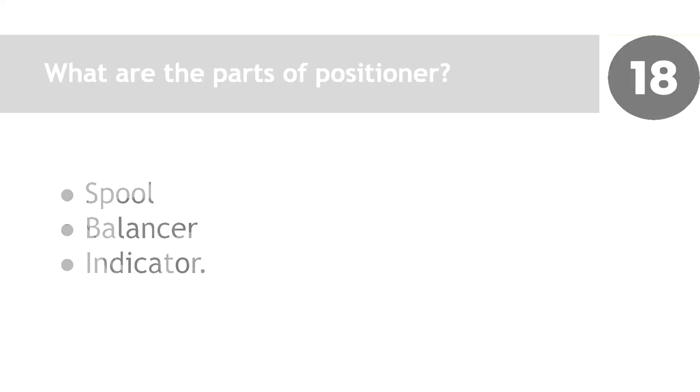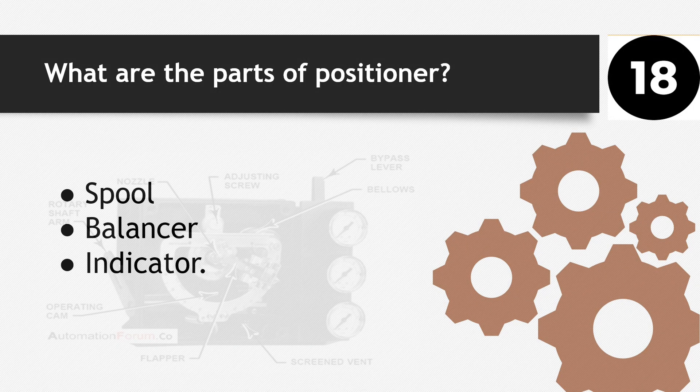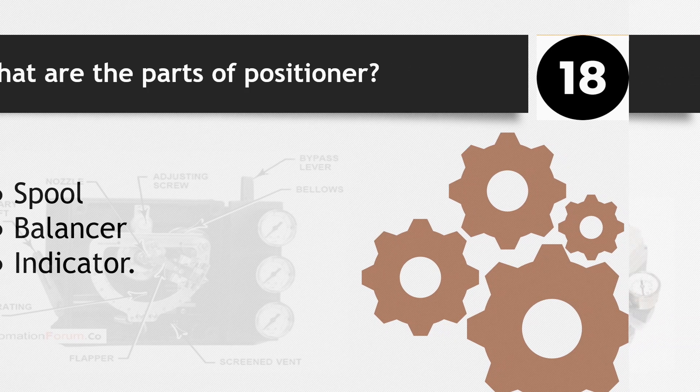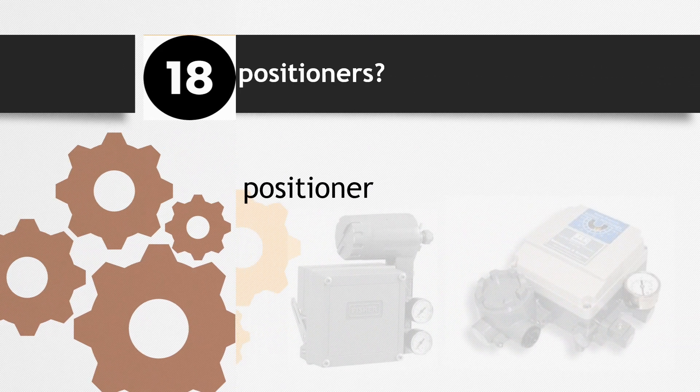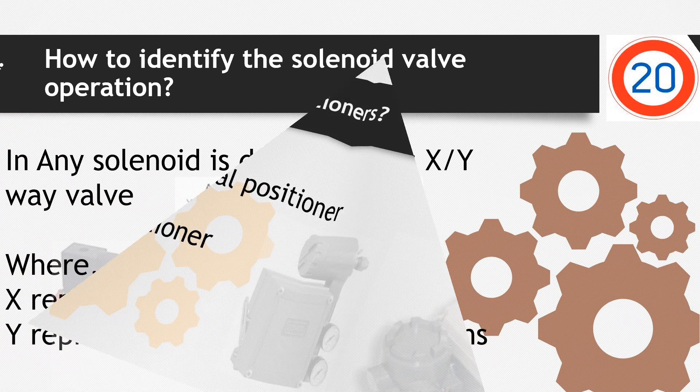Number 18: What are the parts of a positioner? Spool, balancer, and indicator. Number 19: Types of positioners - Conventional positioner and FF positioner.